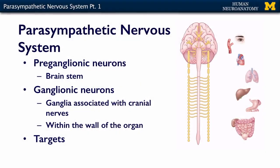In this segment, we're going to talk about the parasympathetic nervous system. The parasympathetic nervous system is a two-chain system, just like the sympathetics, in that the preganglionic neurons reside in the brainstem and in the sacral cord — that's S2 to S4.